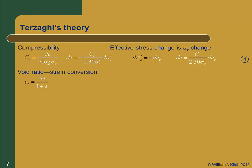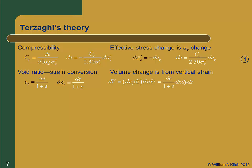Earlier in chapter 10, we proved that vertical strain equals delta e over 1 plus e. We can extend that concept: d epsilon z equals de over 1 plus e. Using our assumption that all consolidation is vertical, the change in volume dv equals d epsilon z times dz — the change in height — times dx dy. Substituting dE over 1 plus e for d epsilon z, and recognizing that dx dy dz is the volume of the element, we arrive at the fifth equation.